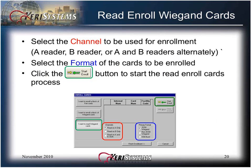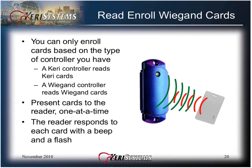If you are Read Enrolling Wiegand Cards, select the channel to be used for enrollment: the A Reader, the B Reader, or A and B Readers alternately. The A and B Readers refers to the connection point of the reader on the master controller. The A Reader is connected to Terminal Block 5; the B Reader is connected to Terminal Block 6. Select the format of the cards to be enrolled and then click the Start Enroll button. You can only enroll cards based on the type of controller you have — a Carry Controller reads Carry Cards, and a Wiegand Controller reads Wiegand Cards.